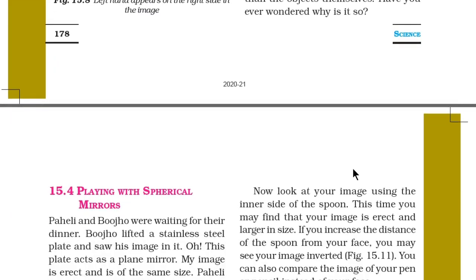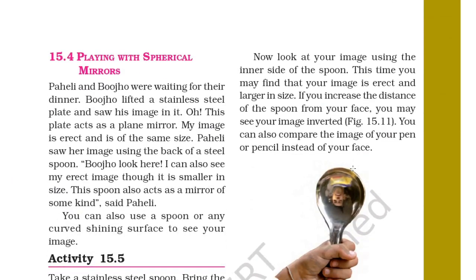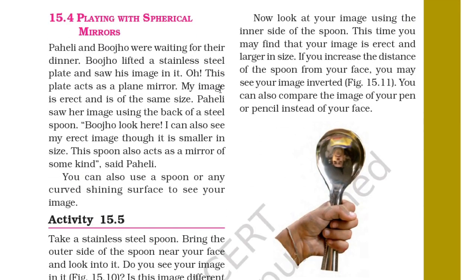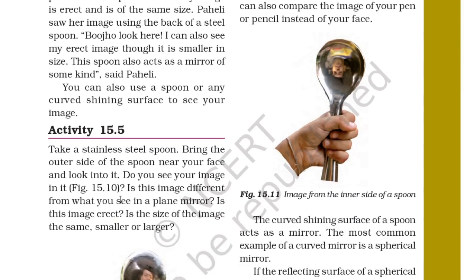Section 15.4: Playing with Spherical Mirrors. Paheli and Bojo were waiting for dinner. Bojo lifted a stainless steel plate and saw his image — erect and of the same size. Paheli saw her image using the back of a steel spoon: the image was erect but smaller in size. Thus the spoon also acts as a mirror of some kind. You can also use a spoon or any curved shining surface to see your image.